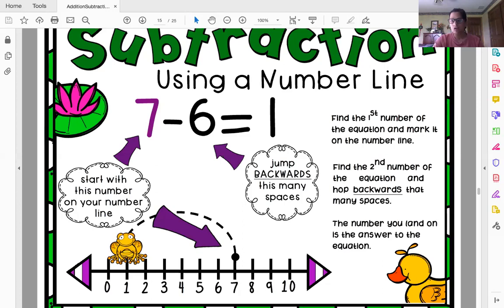The next thing I'm going to do is I'm going to find the second number of the equation and hop backwards that many spaces. So the second number is here. We already see minus the minus six. So I'm not going to jump to my six, but I'm going to jump back six times. So count with me.